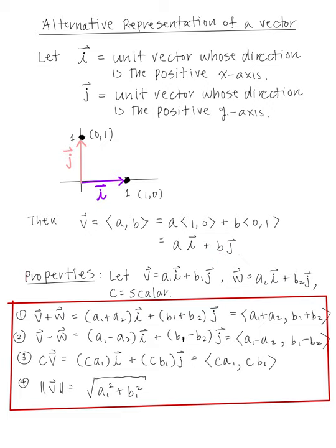Here are more properties. Let V equal a1 times i plus b1 times j, and W equal a2 times i plus b2 times j, with C as a scalar. Then V plus W equals the quantity a1 plus a2 times i plus the quantity b1 plus b2 times j — in vector notation that's a1 plus a2 comma b1 plus b2. V minus W equals the quantity a1 minus a2 times i plus the quantity b1 minus b2 times j, or in vector notation a1 minus a2 comma b1 minus b2.